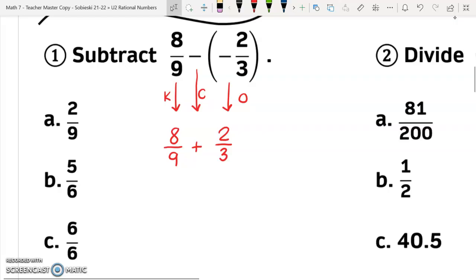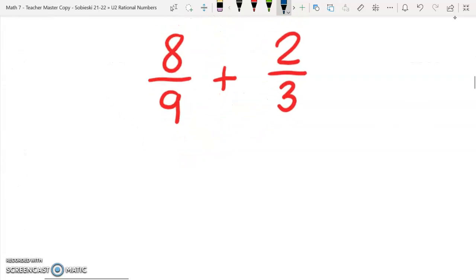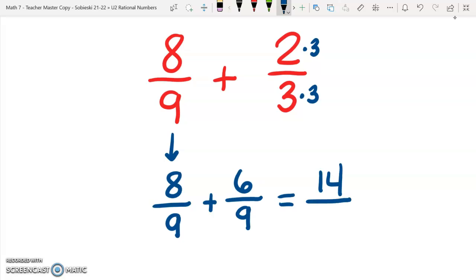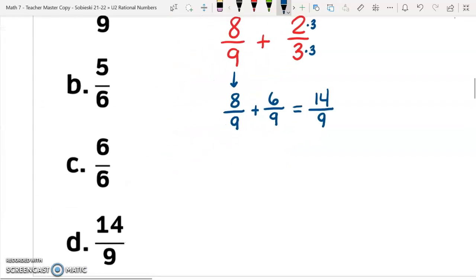All right, so let's look at number one. This is a subtraction problem with fractions. If you do keep change opposite, you can switch this to an addition problem. Keep the 8/9, change to a plus sign, and the opposite of -2/3 is +2/3. We need to make sure they have common denominators. Let's take our fraction on the right and multiply the top and bottom by three to get nine in the denominator. Two times three gets us six in the numerator. Then just add our numerators, gets us 14, and keep our denominator. So 14/9 looks like D is the best answer choice for number one.